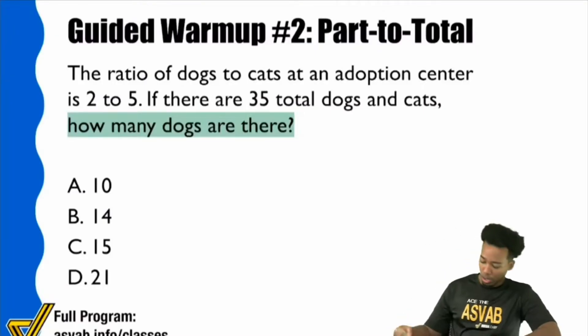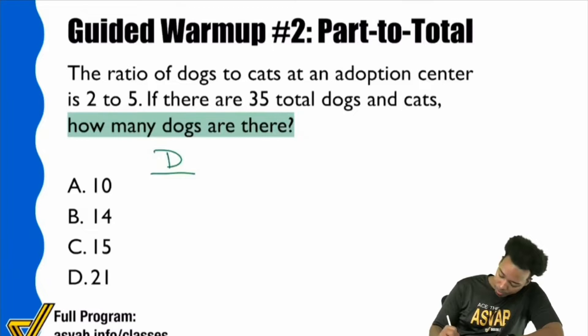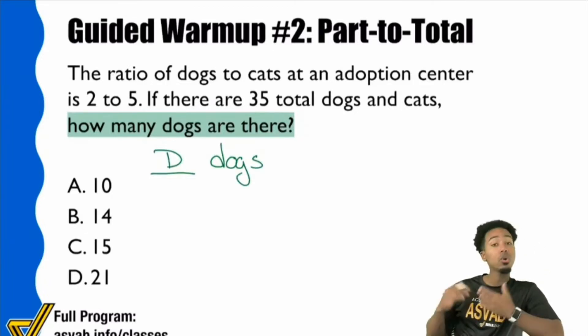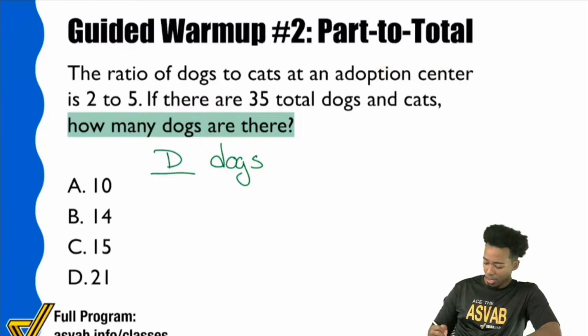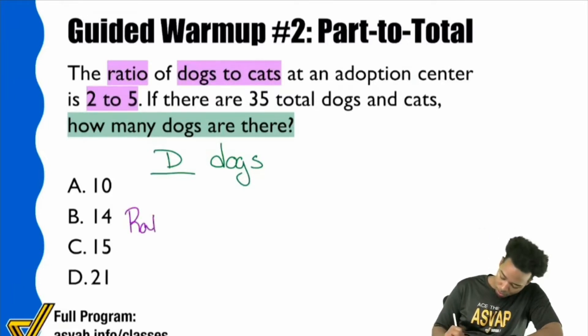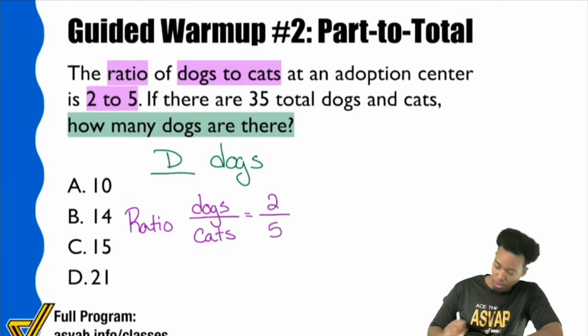So here, we're looking for the number of dogs. I'm going to say D for dogs. Let's read the information. Let's see what we got. So the ratio of dogs to cats at an adoption center is two to five. OK, let's write that down. Ratio dogs to cats is two to five. So I'm going to write that down. So the ratio, and I'm going to say dogs to cats. So I'm going to put dogs over cats. And they say it's two over five.